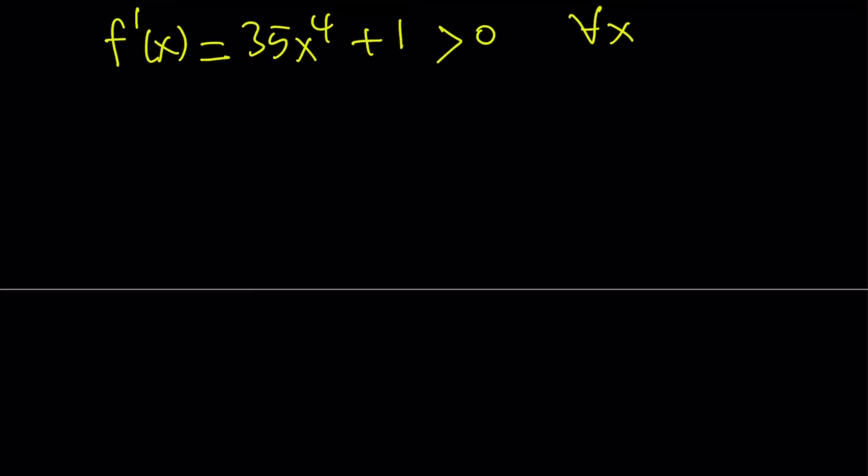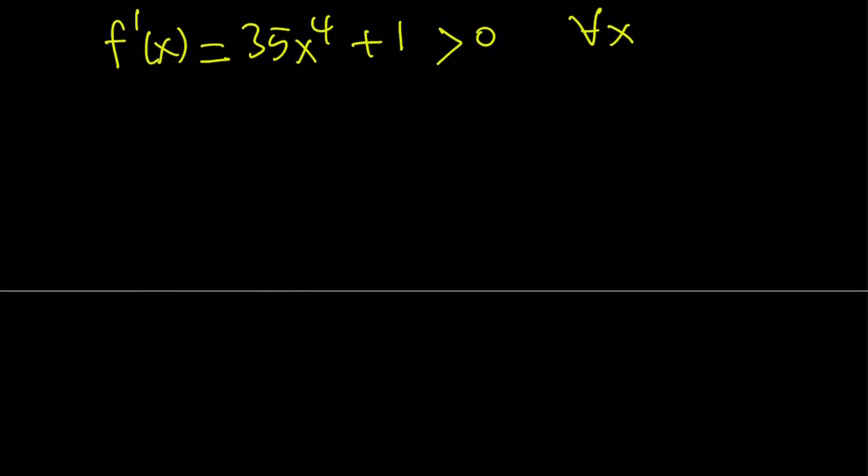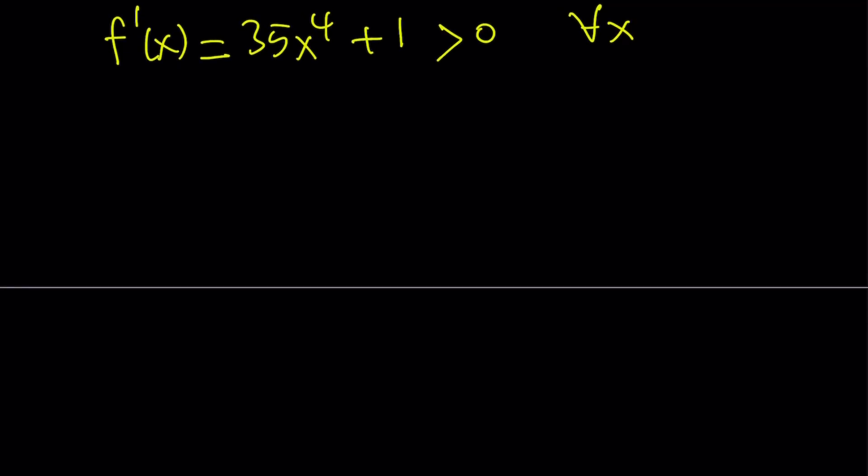What is that supposed to mean? Well, when the first derivative is positive on a certain interval, that means the function is increasing. But this is true for all x values. Therefore, f of x is always increasing.